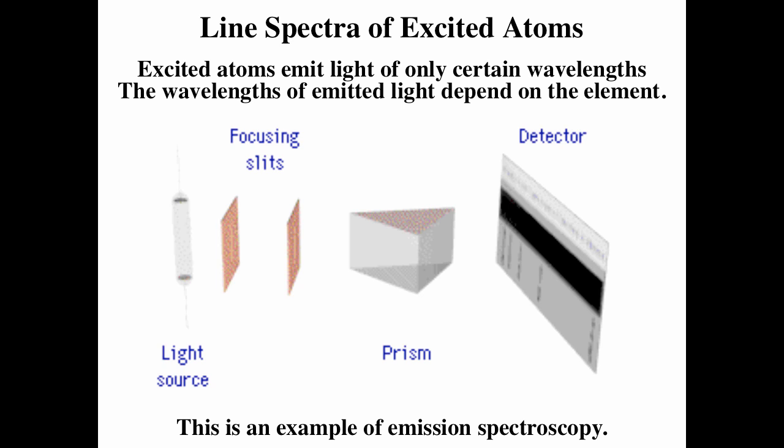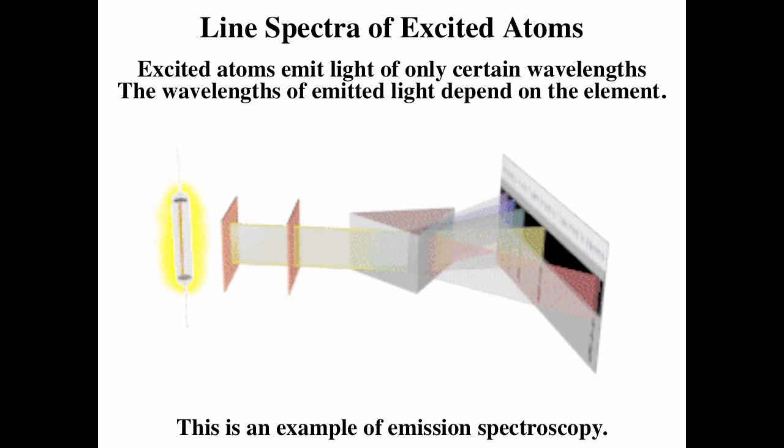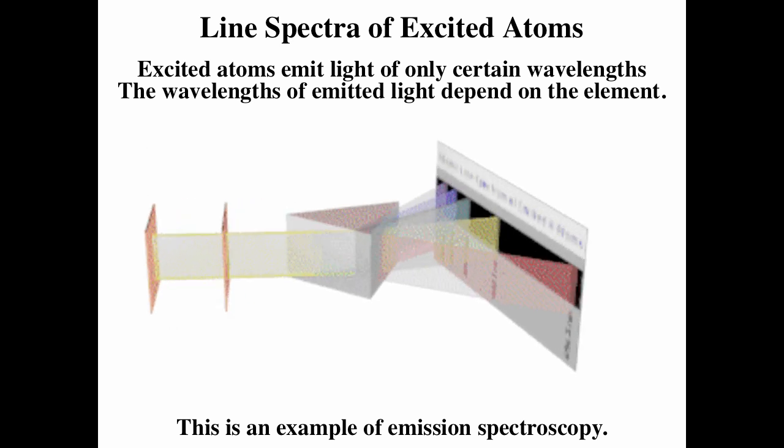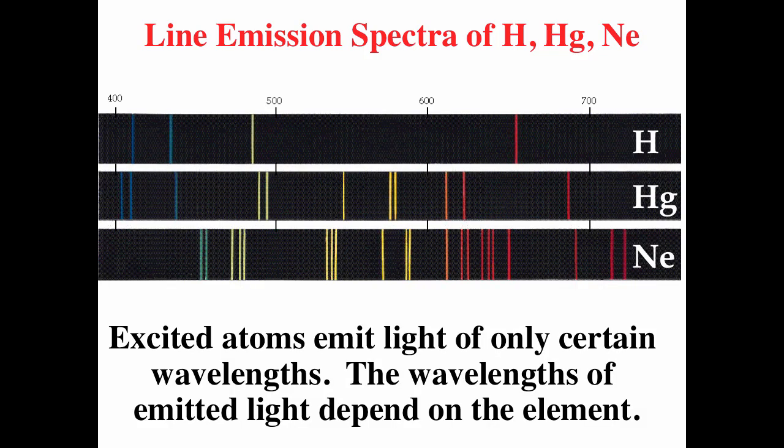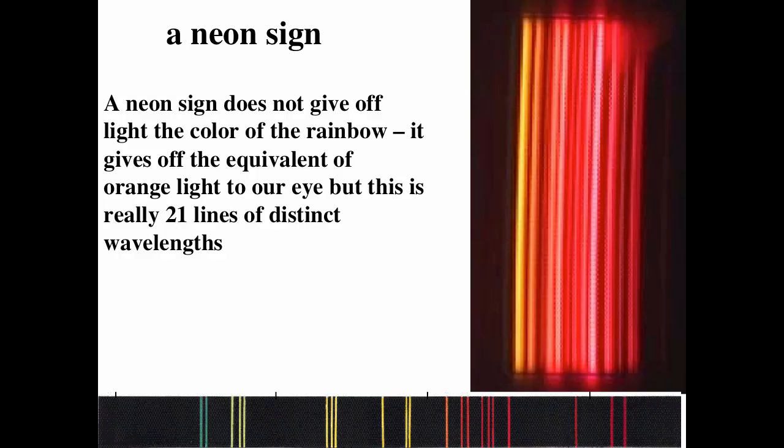If high voltage is applied to an element in the gas phase, the element emits light. Using a prism, we can split the light into its component colors. Every element emits a distinct set of colors unique to that element because the energy states are different for each element. Here's the emission spectra for hydrogen, mercury, and neon. It's kind of cool for a neon sign. We only see one color with our eye, but there's actually 21 distinct lines in that spectrum.